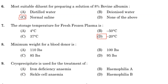Ninth question: cryoprecipitate is used for the treatment of. Option A: iron deficiency anemia. Option B: haemophilia A. Option C: sickle cell anemia. Option D: haemophilia B. Answer is Option B, haemophilia A. Haemophilia B is the deficiency of factor 9, and cryoprecipitate contains no factor 9. Therefore, cryoprecipitate has no value for the treatment of haemophilia B.